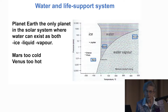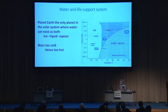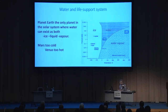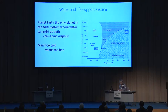Planet Earth is the only one where water can exist as both ice, liquid, and vapor. There are very large energy amounts involved in water's changing from ice to liquid water to vapor, and that is the reason why we can live here on this planet.